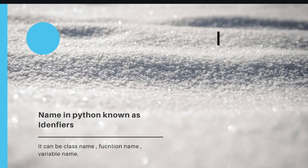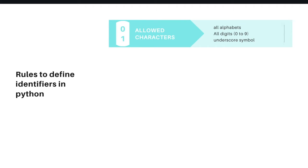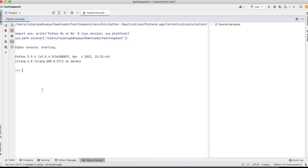The first rule is about allowed characters. All alphabets from a to z, all digits from 0 to 9, and only the underscore symbol are allowed. For example, in the Python console, I define a variable 'a' equal to 2 and print it — it prints 2. So a single alphabet is a valid identifier.